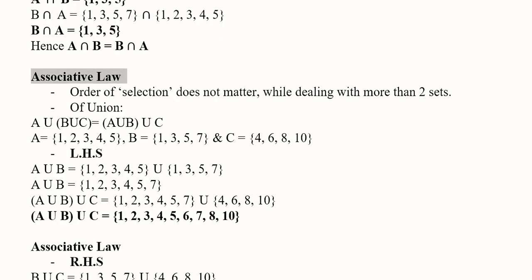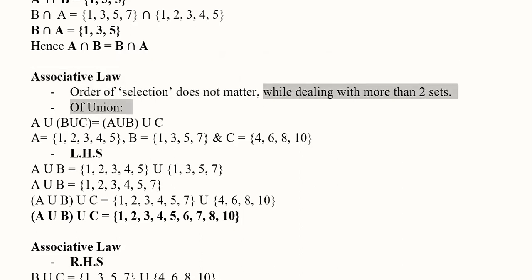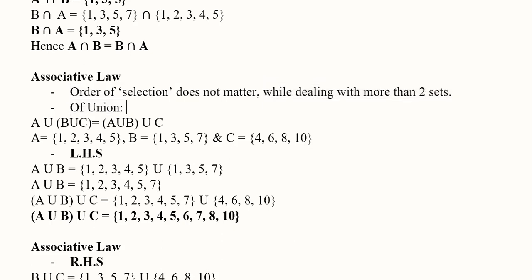Now we have the associative law. What we say here is that the order of selection does not matter when dealing with more than two sets. The order of selection is again relevant, but the number of sets has increased from 2 to 3.